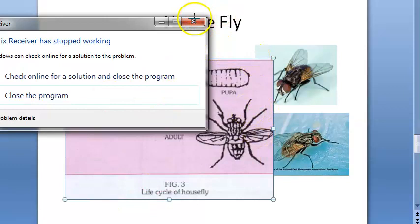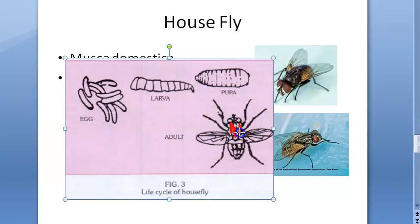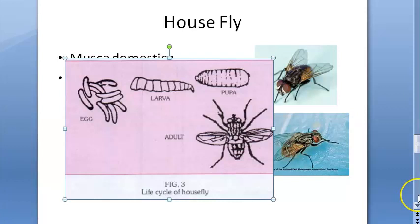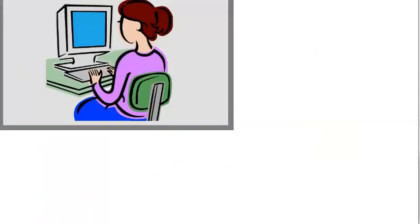You can see the longitudinal stripes on the thorax - this is a characteristic of the genus Musca domestica. The thorax bears a pair of wings and three pairs of legs. The legs have pads which enable them to walk on highly polished surfaces.